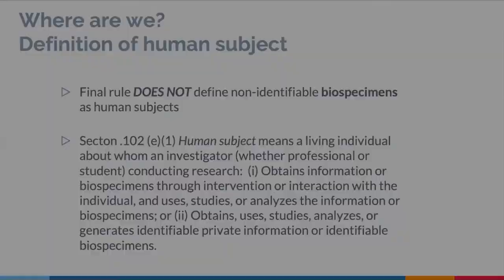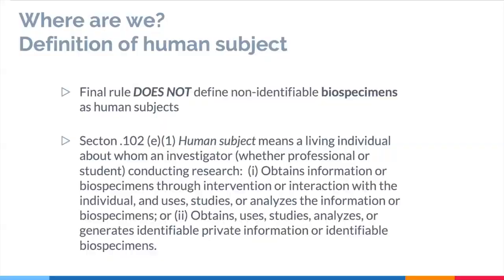The revised Common Rule became official on January 19, 2019, with a few parts still being phased in. The new Common Rule does not define non-identifiable biospecimens as human subjects — for now, non-identifiable biospecimens and DNA samples do not constitute human subjects. For the research community, there was a sigh of relief, as defining them as human subjects would have been a big barrier to research. Biospecimens like newborn screening blood spots still fit into the same non-identifiable category they did prior to the changes.